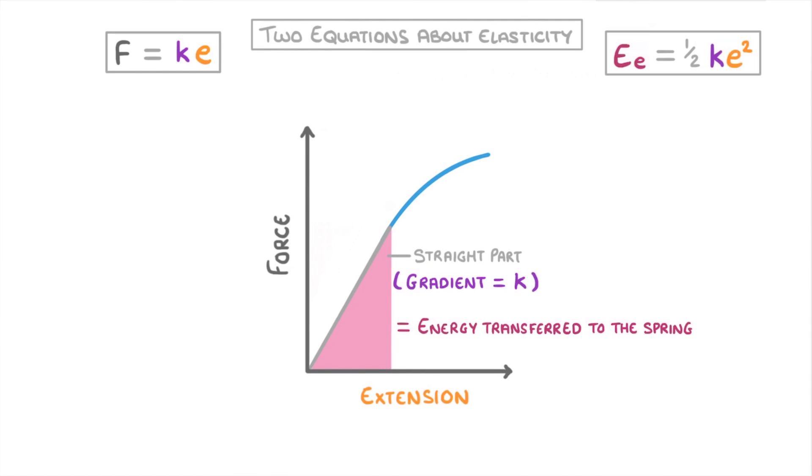The last thing we want to point out is that if you have a graph of force against extension, like this one, then as long as we only look at the straight part of the line, the gradient of the line will be the spring constant. And the area under the curve is equal to the energy transferred to the spring, so the elastic potential energy.